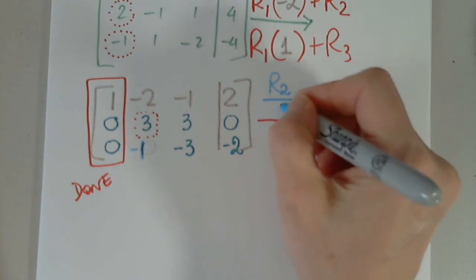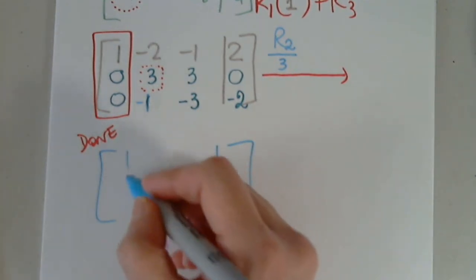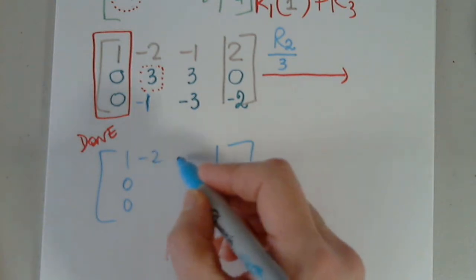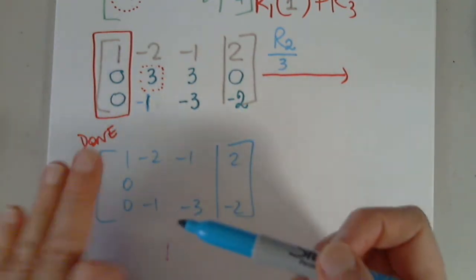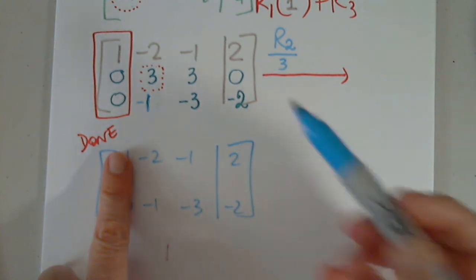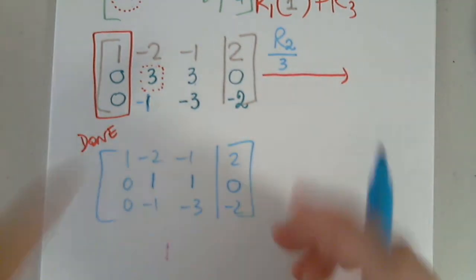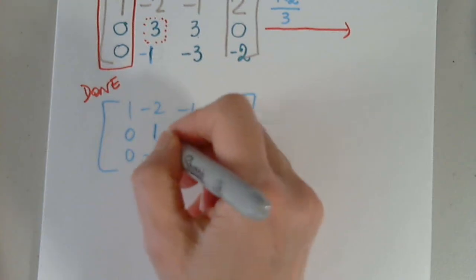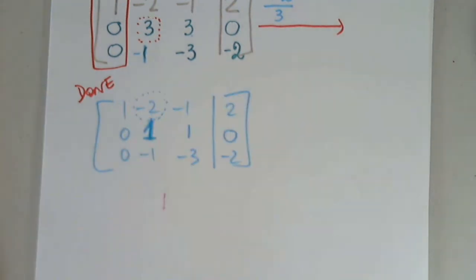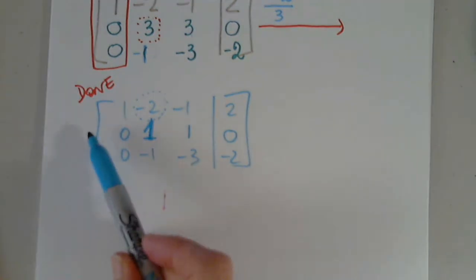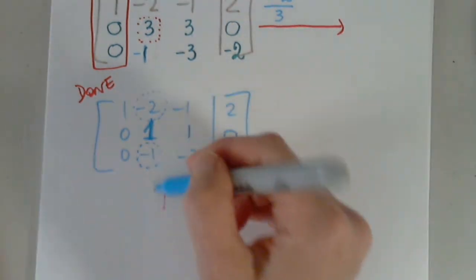So in the next step, we have to divide row two by three. One, zero, zero, negative two get copied; negative one and two get copied; negative one, negative three, and negative two; zero divided by three. Three divided by three is one, three divided by three is one, zero divided by three is zero. What have we accomplished? A lot. We got the one that we needed. Using this, we will have to eliminate the top first row, second column entry and also the third row, second column entry.